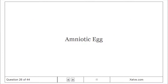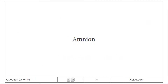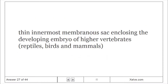Amniotic egg: An adaptation that reduced tetrapod dependence on water for reproduction. Amnion: The thin innermost membranous sac enclosing the developing embryo of higher vertebrates — reptiles, birds, and mammals.